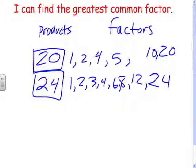7 times anything? No. 8? Yes. 9? No. 10? No. 11? No. 12? Yes. So we have all of our factors of 24.